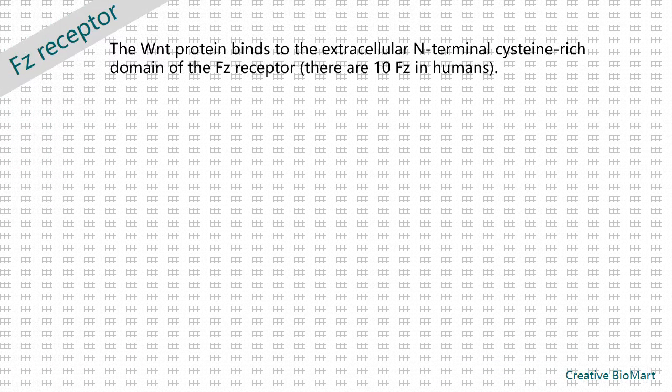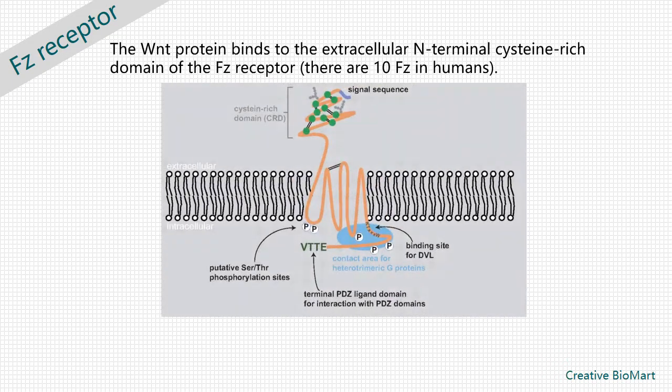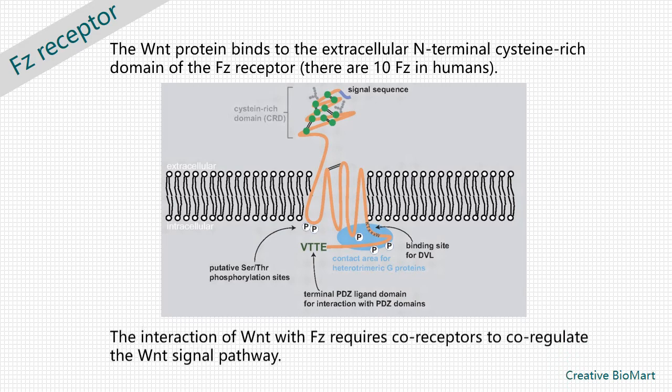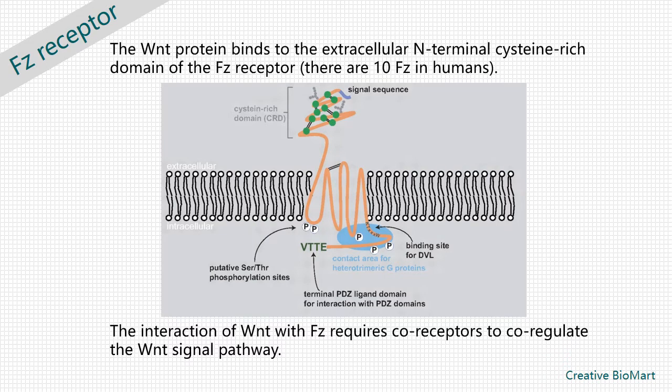The WNT protein binds to the extracellular N-terminal cysteine-rich domain of the frizzled receptor. The frizzled protein is a family of transmembrane proteins that cross the cell membrane seven times, which have a similar topological structure as the G-protein-coupled receptors. The interaction of WNT with frizzled requires co-receptors to co-regulate the WNT signal pathway.